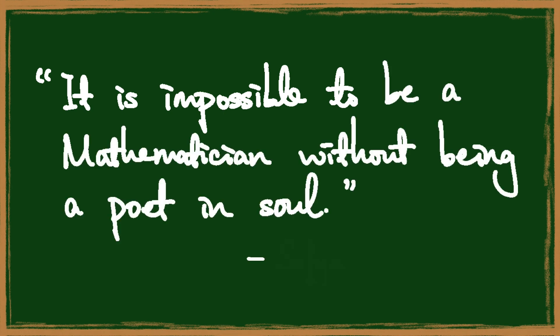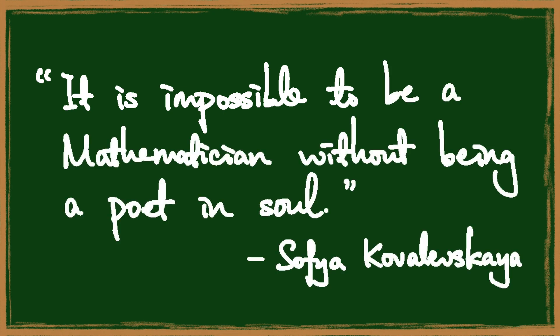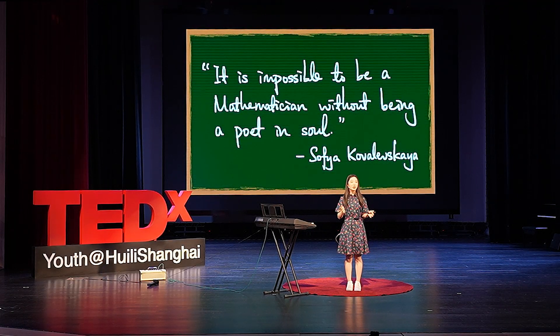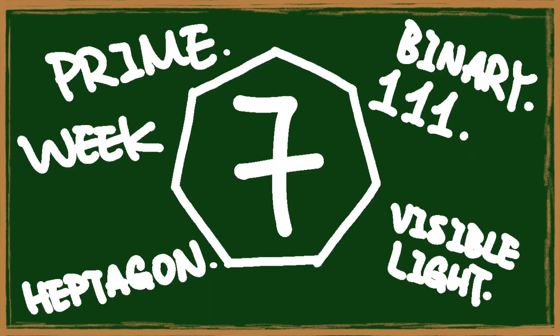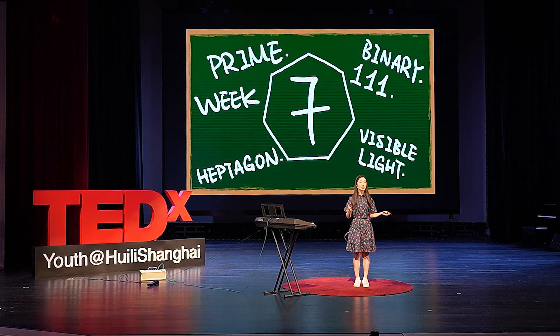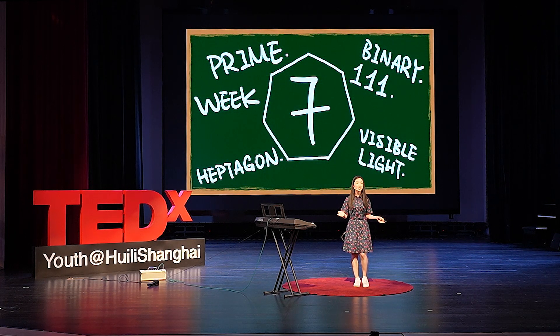I really like Sofia Kovalevskaya's quote: 'It is impossible to be a mathematician without being a poet in soul.' In mathematics, we cannot avoid exploring the relationships between ideas — in this case, we link seven with factors, with the number two, and even with the calendar. And this is part of the meaning of maths. Isn't it no different from literature and arts, where we explore the relationships between objects and the world, or past and future?